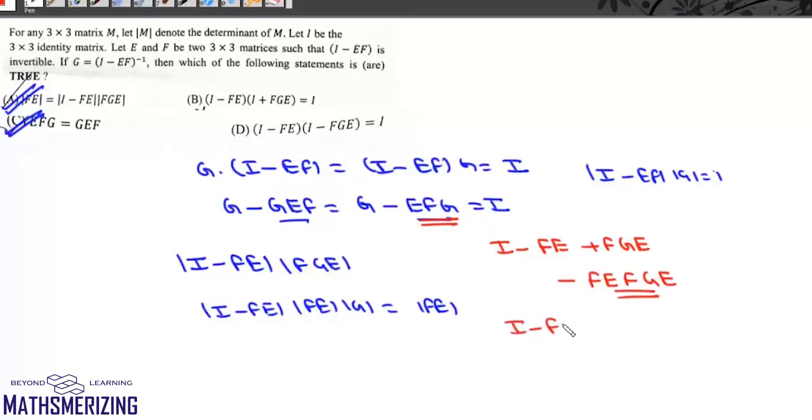So it'll be I minus FE plus FGE, and this is G minus I into E, so it'll be I minus FE plus FGE. Now this FGE and plus FE, now this FGE will cancel. Now if we look at this, option B is also correct.